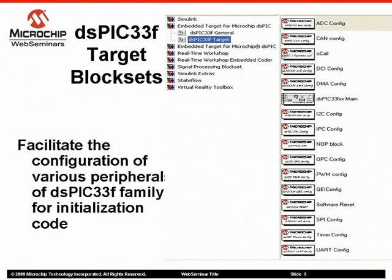The picture here shows the DSPIC 30F Target Library. You can pull these blocks into your models and configure them for your requirements. Peripherals supported include, but are not limited to, the ADC, UART, SPI, Output Compare, CAN, Timers, DMA, I2C, DCI, and Motor-controlled PWM, as well as others. This library also has a block called CCALL to import user-developed C routines into Simulink models. These routines would be compiled and built along with the files generated from the model.